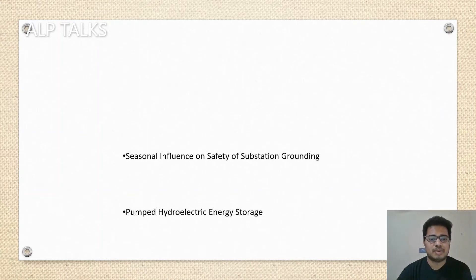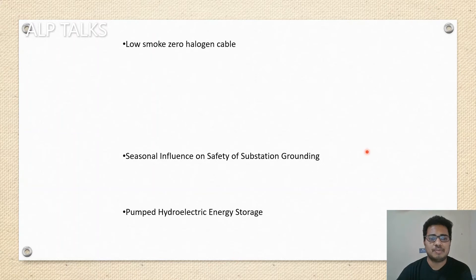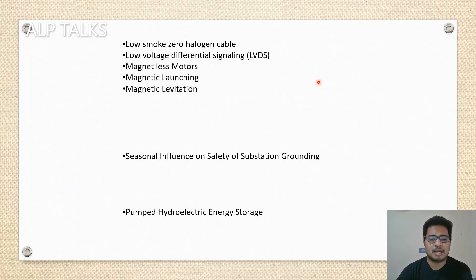Many more topics: seasonal influence and safety of substation grounding — this is also one of the important things in substation. Pumped hydroelectric energy storage — in hydroelectric power plants, whenever water flows downward, we put it back and use that water again whenever there is a shortage. Low smoke zero halogen cable, low voltage differential signaling, magnetless motors, magnetic launching, magnetic levitation — most metro systems in developed countries are using magnetic levitation trains. MEMS — a pollution-free option for power generation. Metamorphic robots.